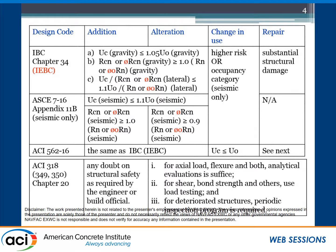ACI 318 — and also ACI 349, which is nuclear-related concrete, and ACI 350, environmental engineering concrete — all share the same Chapter 20 based on ACI 318. They say that if you have any doubt about structural safety, as required by the engineer or building official, you should do a structural evaluation or load testing. For flexural bending moment failure mode, if there's concern, you can do it analytically using field data. But if you have doubt about shear or bond, you have to do load testing, because flexural behavior is more predictable than shear. When dealing with a deteriorated structure, you may need to do periodic testing.